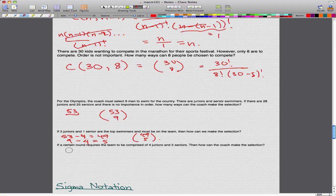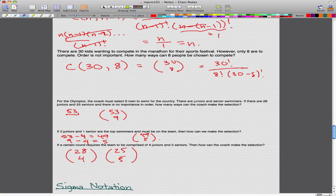For the last one, if a certain round requires the team to be comprised of 4 juniors and 5 seniors, how can the coach make the selection? There are 28 juniors. So of those 28 juniors, 4 must be selected. So 28 choose 4. And there are 25 seniors, and 5 of those seniors must be selected. So 25 choose 5. We take these two numbers that we came up with, we times them together, and that's the number of ways that you can get, that's the number of ways to get an order for the competing team.